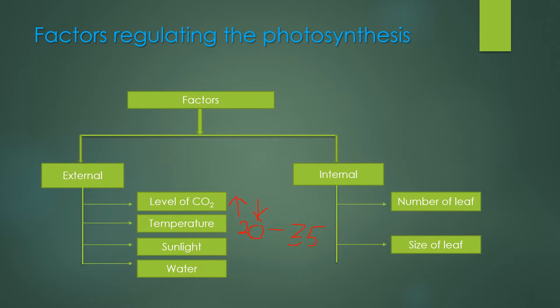Next is sunlight. Green plants or the chlorophyll molecules can absorb sunlight within a wavelength of 400 to about 700 nm. In this range of sunlight, green plants can absorb the light. Below or above this range, photosynthesis cannot be performed.